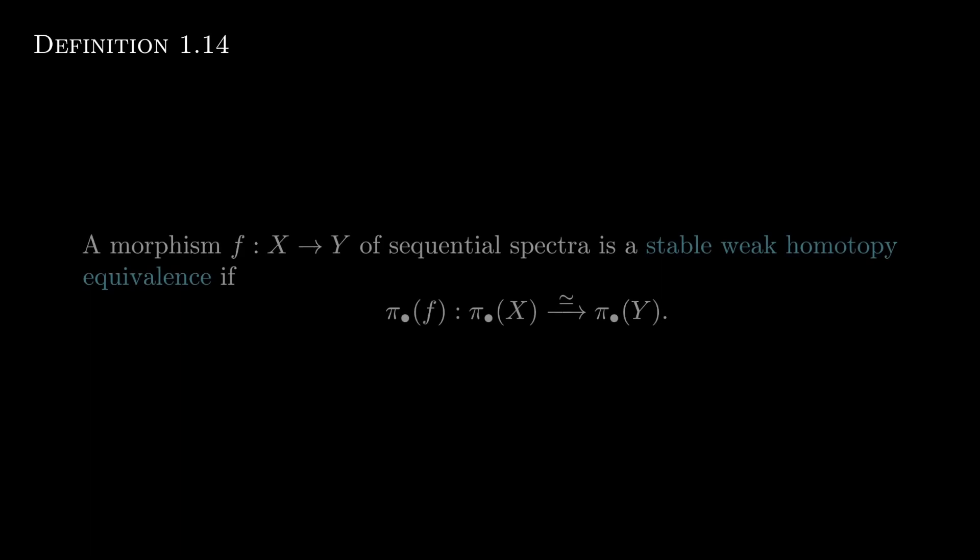As a last quick definition, there is a stable weak homotopy equivalence f between sequential spectra X and Y if it induces isomorphisms on all stable homotopy groups. Just extending the idea of weak homotopy equivalence to this new setting.